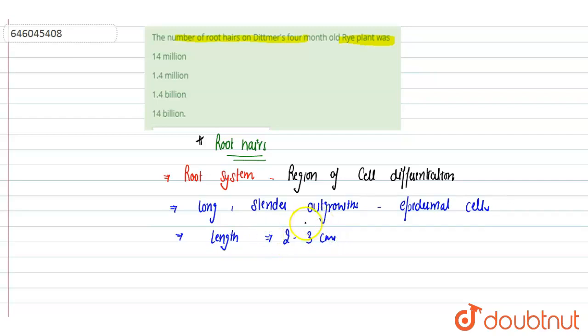And if you see, they are produced continuously for the life of the plant, but individual hairs generally outgrow in a number of days. So in 1937, Ditmer, a scientist during experiments.